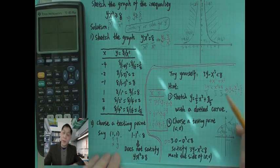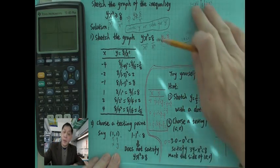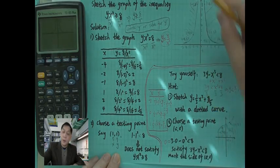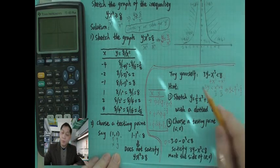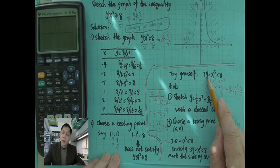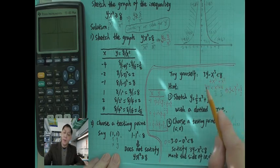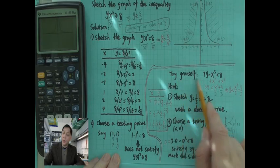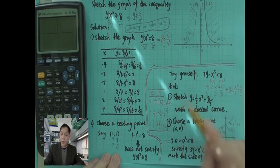Here is another example. Here it says that 3y minus x cubed less than 8. Try this yourself.